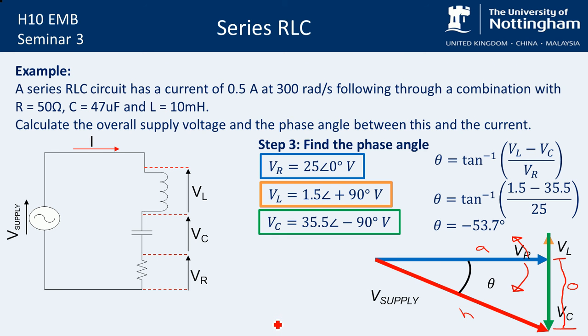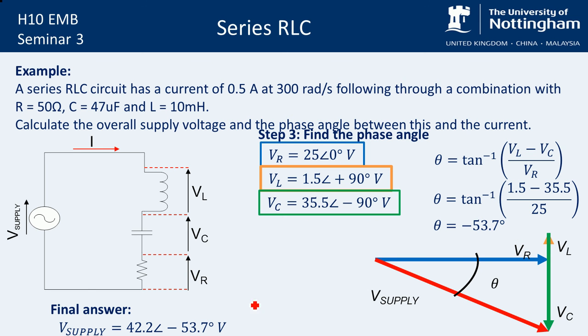So hopefully that makes sense. But really, it is just practice. And the more practice you have on these, the more comfortable you're going to be with this stuff. So our final answer, we can write V supply is equal to a magnitude of 42.2 at an angle of minus 53.7 degrees. And remember, it's in volts. So stick that volt symbol on the end.